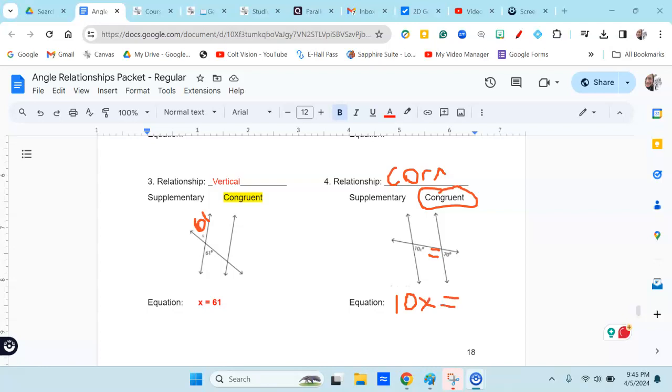So 10x equals 70. And this time, although that angle right there is 70, I'm going to solve this equation. When I solve it, I divide both sides by 10, so x equals 7. I found what x equals, and then that means this angle is 10 times x, which is 70.